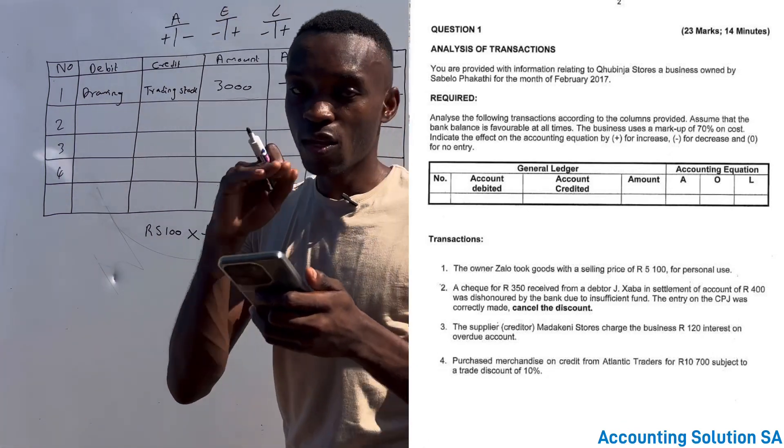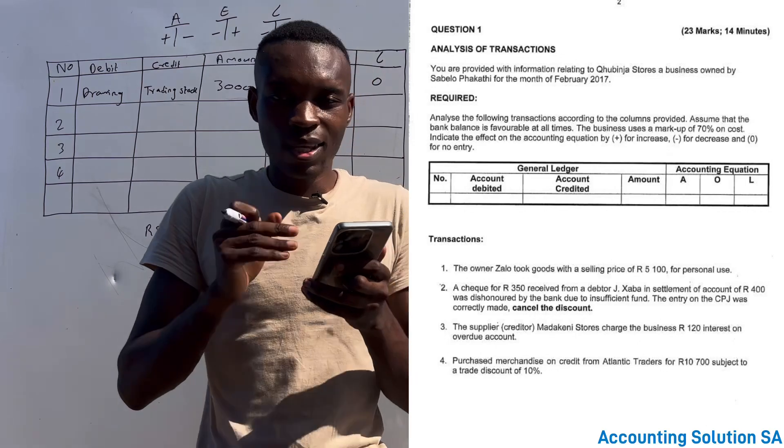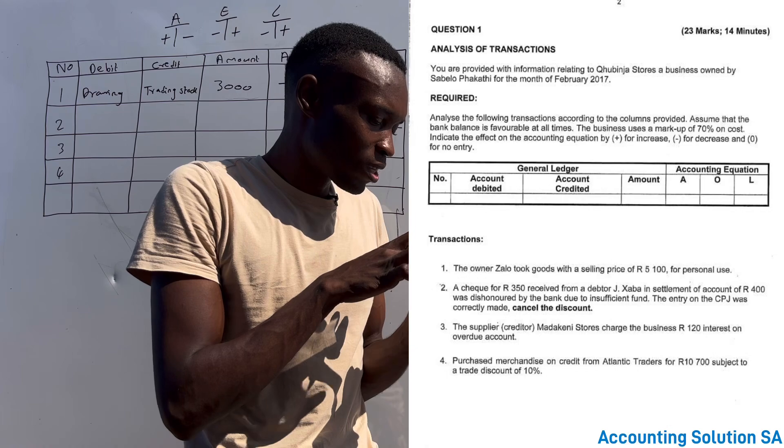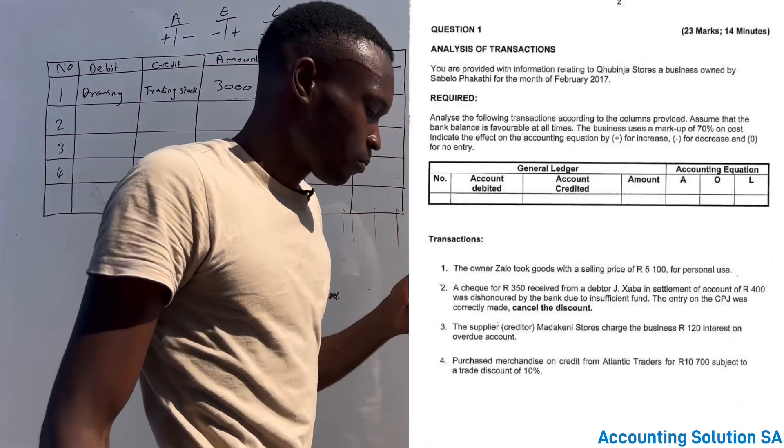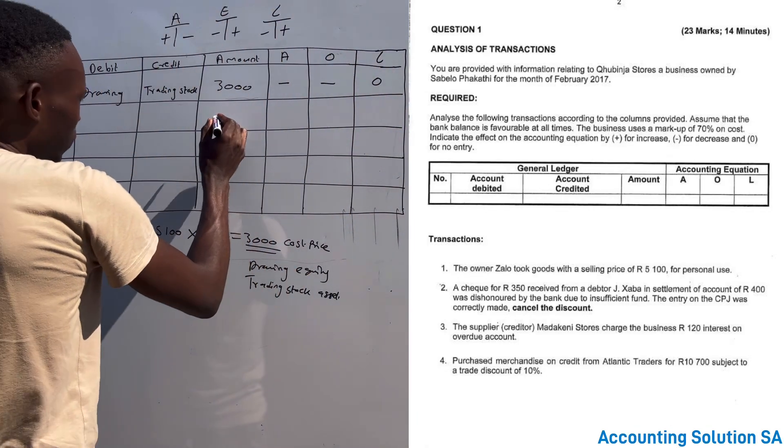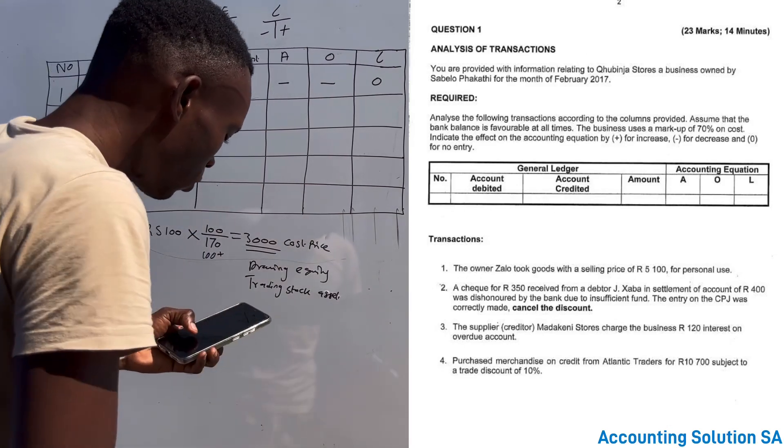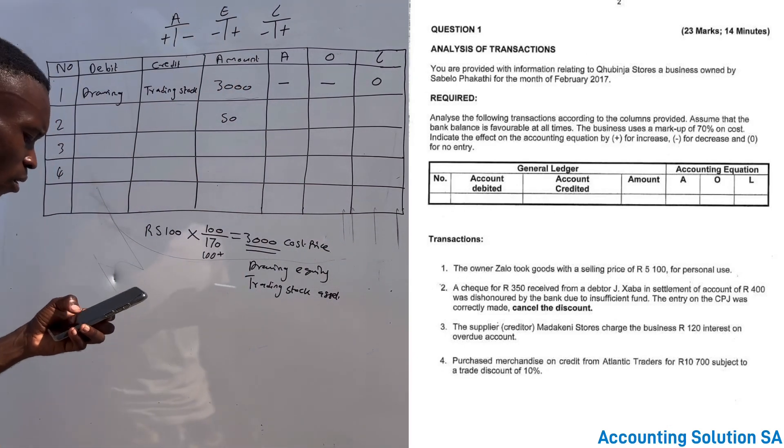The entry on the cash payment journal was correctly made. Cancel the discount. If you check, they even bolded it: cancel only the discount. So discount in this case is the difference between 350 and 400, which means that it's 50 rand discount.